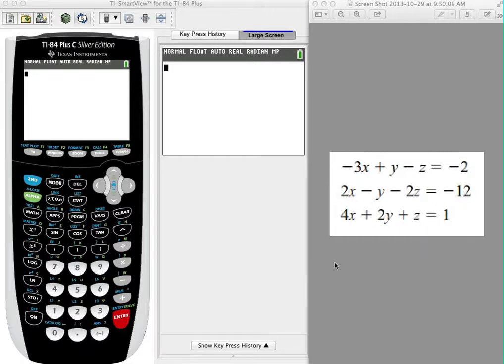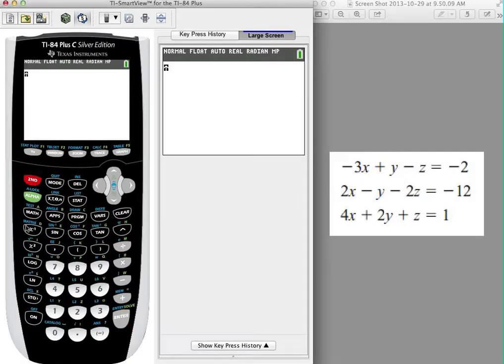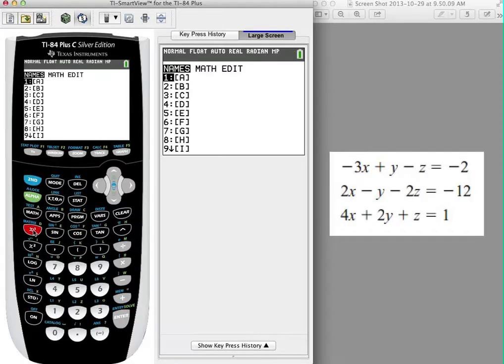What I'm going to do is I'm going to enter all this information into a matrix. So I need to go find the matrix menu. This is your first experience with the matrix menu, but here it is: it's in second, and I hit right here, you see it in blue right above X and negative one. So I hit second and then I hit this, and it takes me to the matrix menu.